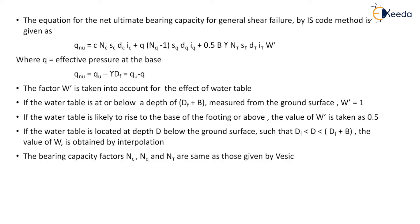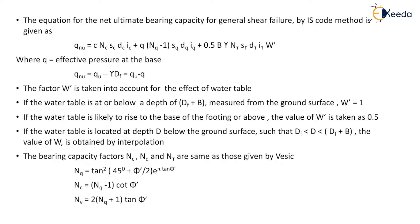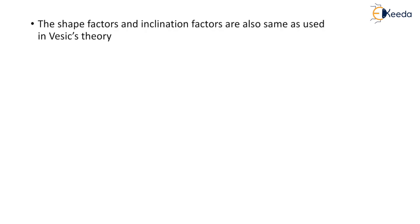The bearing capacity factors Nc, Nq, and Nγ are the same as those given by the base theory. Nq = tan²(45° + φ'/2) · e^(π·tan φ'). Nc = (Nq − 1)·cot φ'. And Nγ = 2·(Nq + 1)·tan φ'.